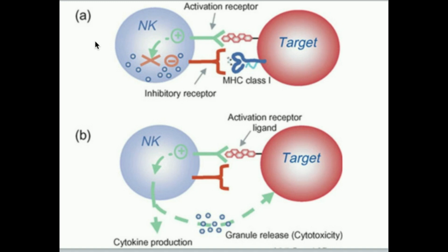One thing you'll typically hear about natural killer cells is that they participate in something called immunological surveillance. They roam your body and look for things that are abnormal, such as an invading pathogen.